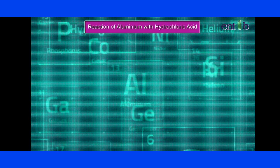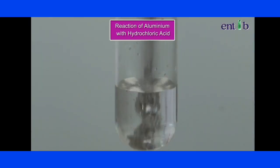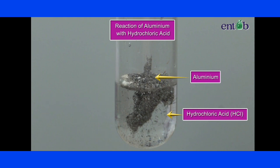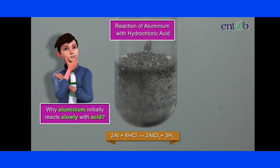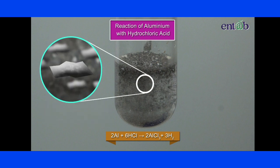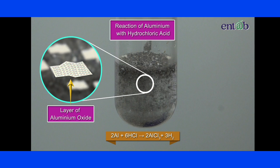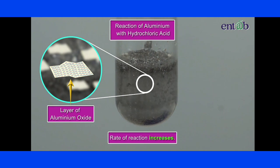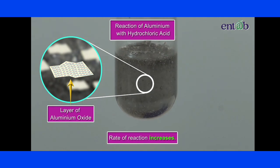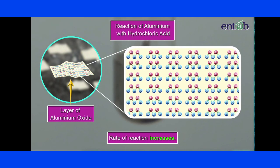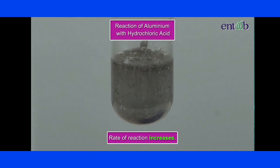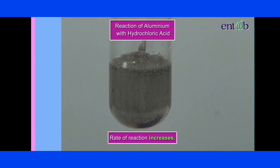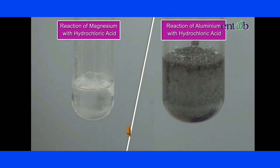Let us now observe the reaction of aluminium with hydrochloric acid. Aluminium initially reacts slowly with the dilute hydrochloric acid. It is due to the presence of a tough protective layer of aluminium oxide on its surface. Observe carefully — the rate of reaction accelerates, indicating that when the topmost oxide layer dissolves in acid, the exposed fresh layer of aluminium metal reacts rapidly. The reaction of aluminium is less rapid than that of magnesium, indicating that it is a lesser reactive metal.